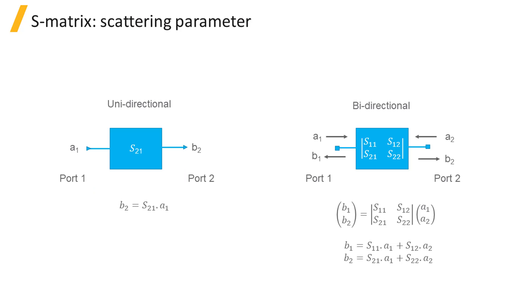For a simple 2-port unidirectional element supporting a single mode at either port, the S-matrix is a single complex value, S21. The output signal B2 is equal to the input signal A1 multiplied by the scattering parameter S21.